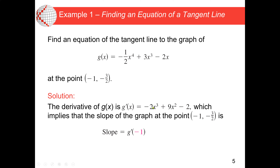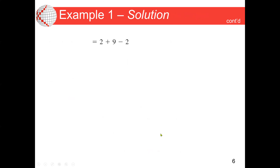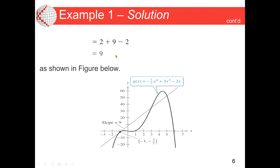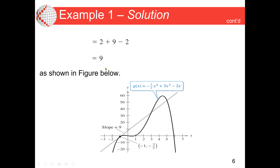Now we have the derivative of g(x). We substitute the x-value of negative 1 into the derivative equation. We compute negative 1 cubed and negative 1 squared in the expression. Solving this gives us a value of 2. So 2 is our slope.